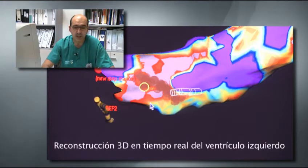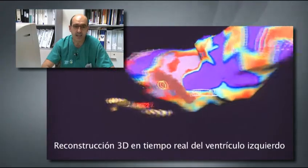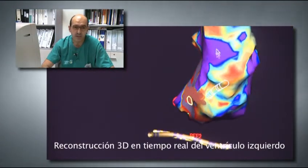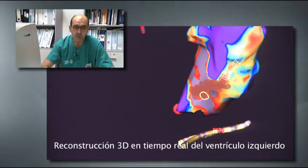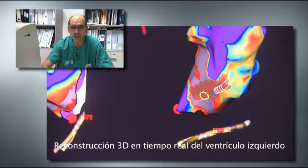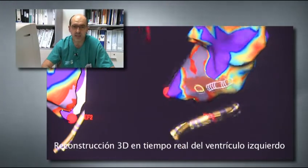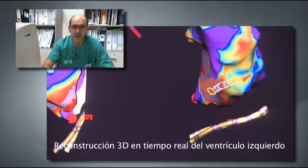Consiste básicamente en buscar el circuito de reentrada de la taquicardia ventricular mediante un sistema de navegación electroanatómica y hacer una reconstrucción de ese ventrículo, buscar las zonas de conducción lenta donde puede haber circuitos que originen esas taquicardias ventriculares y hacer una ablación.